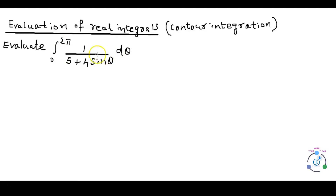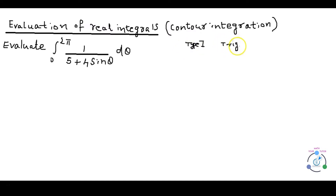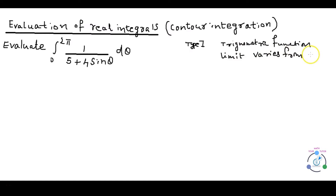In case of contour integration, the most critical aspect of solving the problem is identifying the type of the given question. In this question, we have a trigonometric function sin θ and the limit varies from 0 to 2π. So we know that it is a question of Type 1.